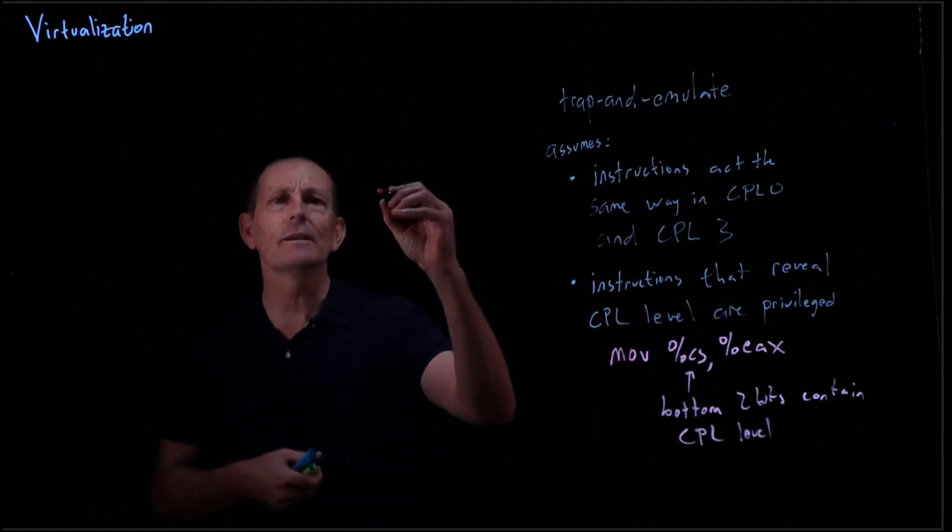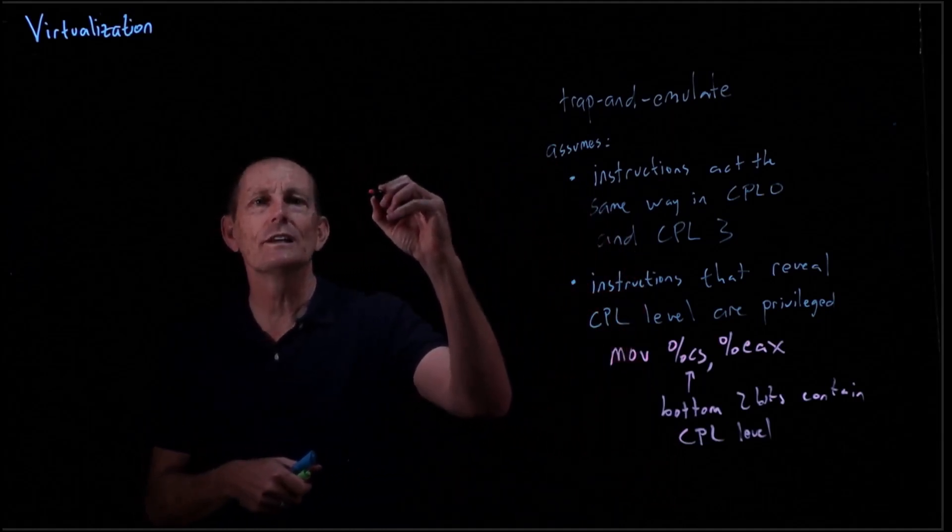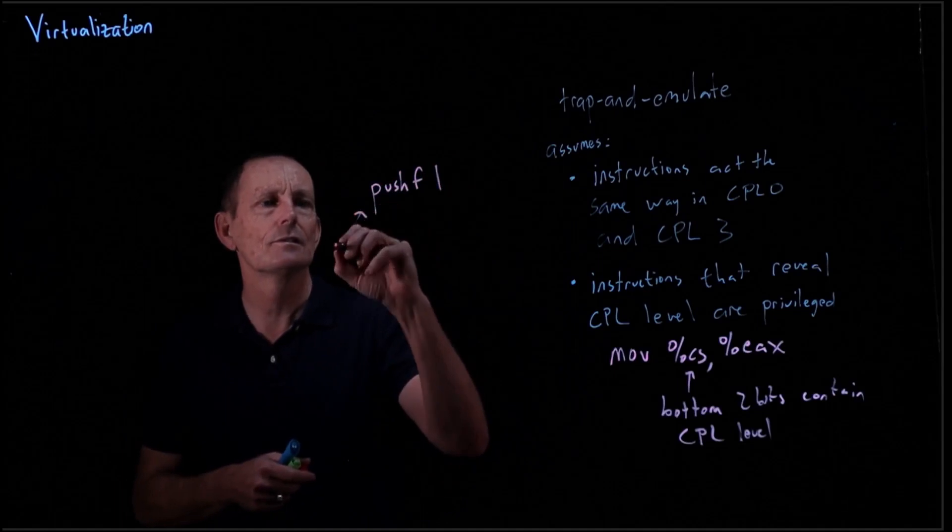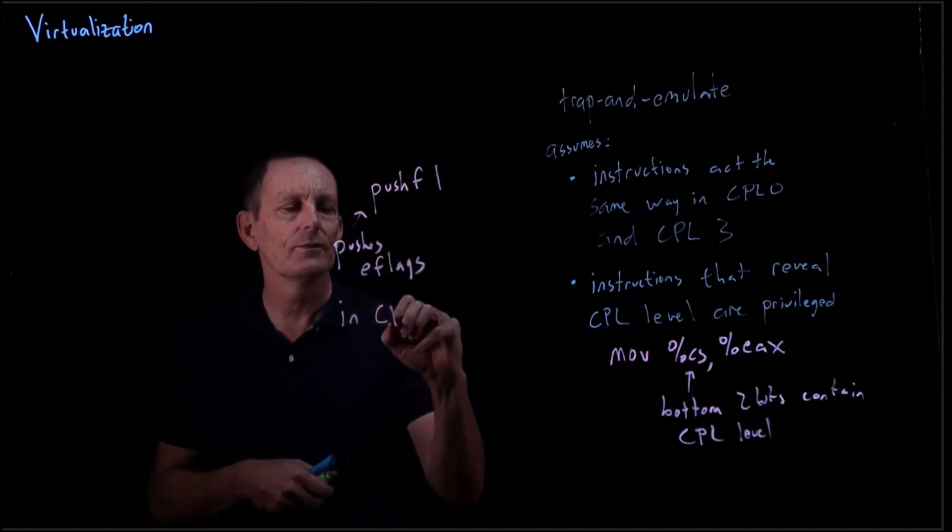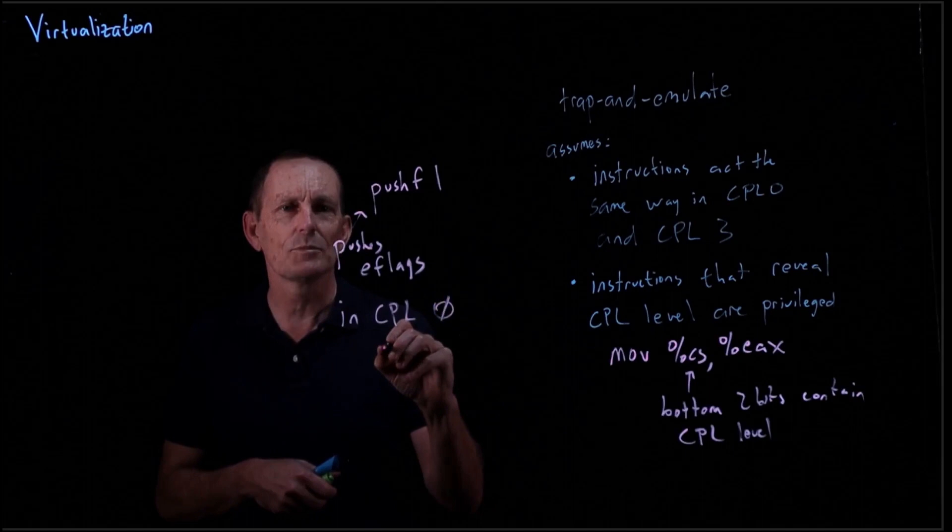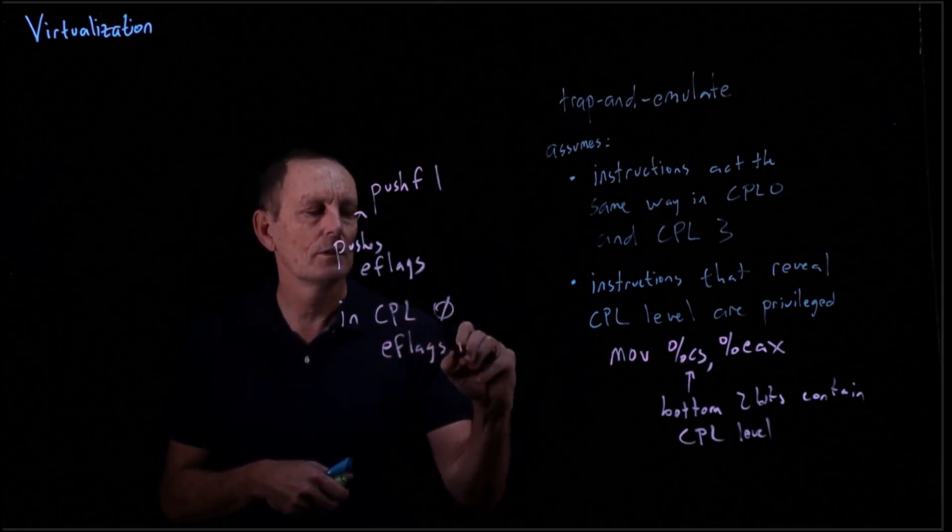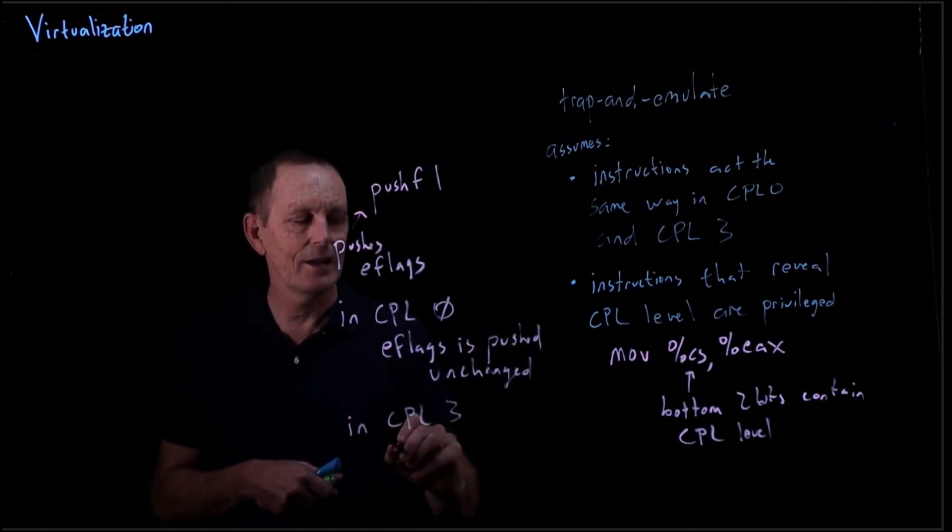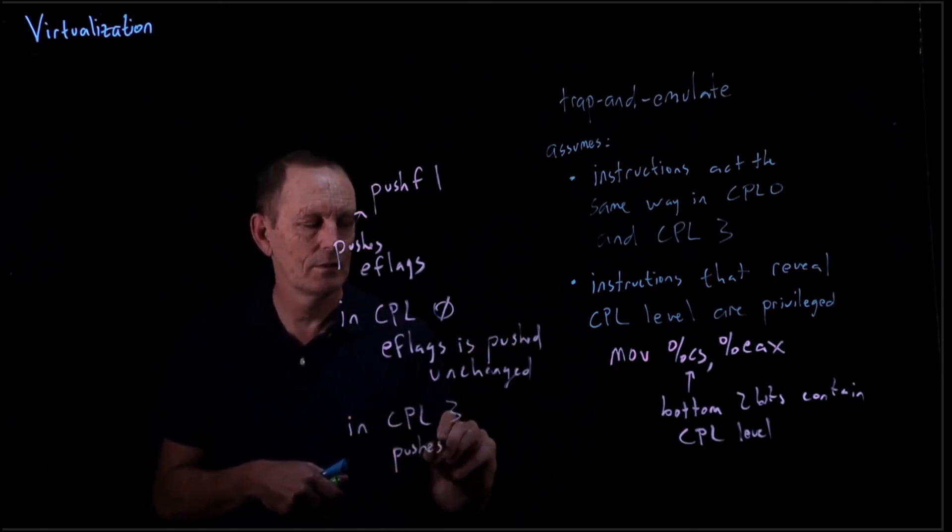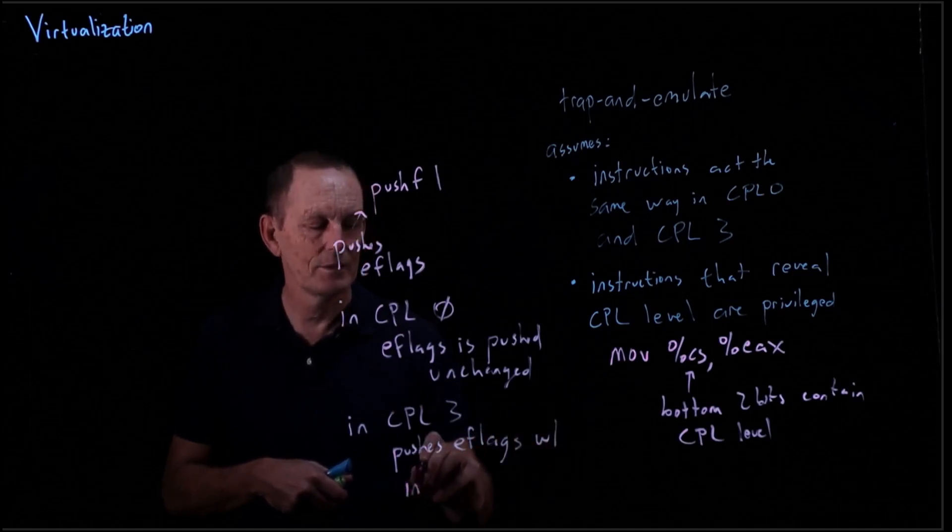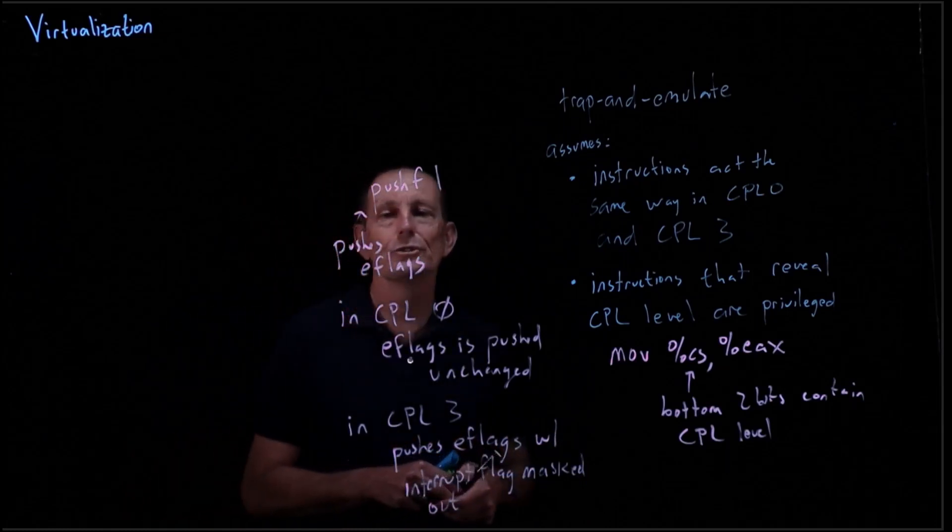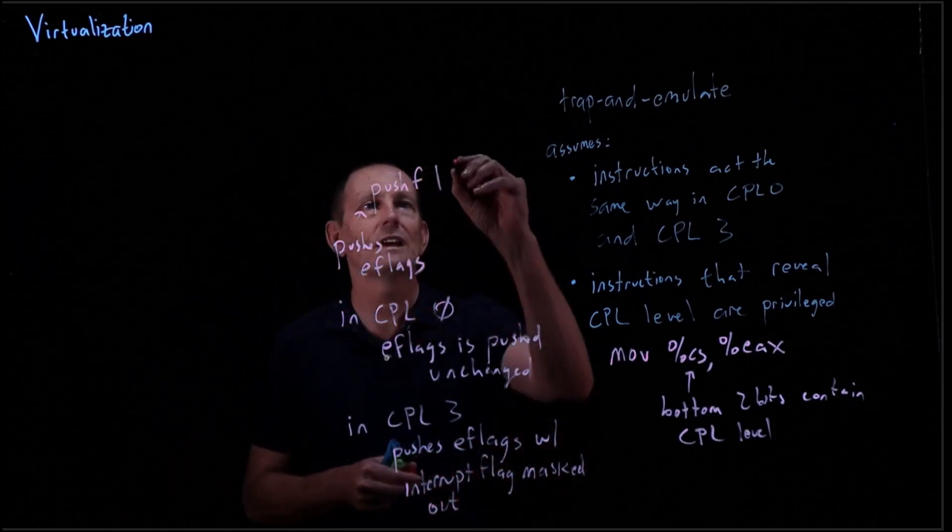An example of instructions that act differently. If we for instance do a push flag, it'll push the e-flags. In CPL0, all of e-flags is pushed, so e-flags unchanged is pushed. In CPL3, it masks out, so it pushes with the interrupt flag masked out. And actually the same thing is true for a pop flag as well.